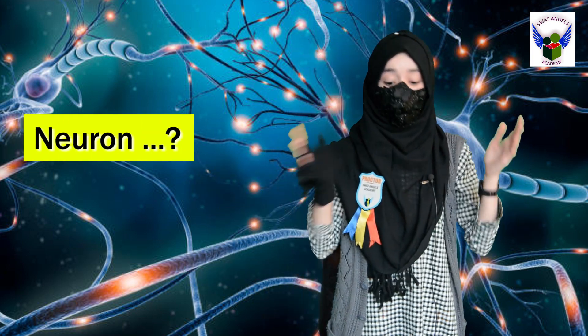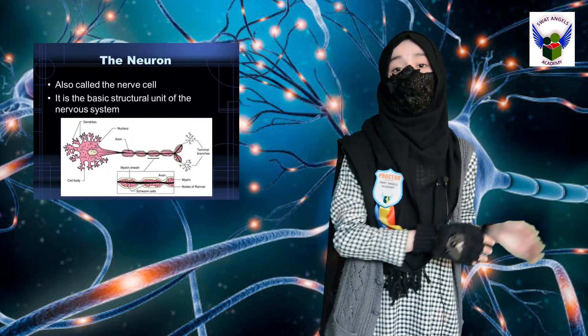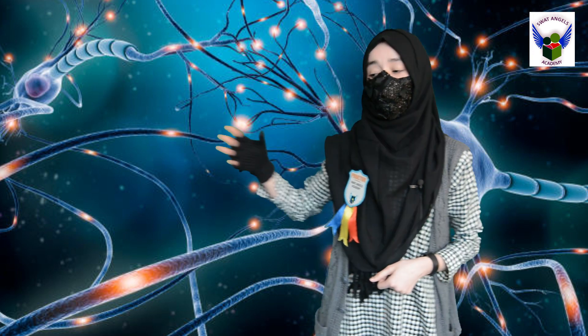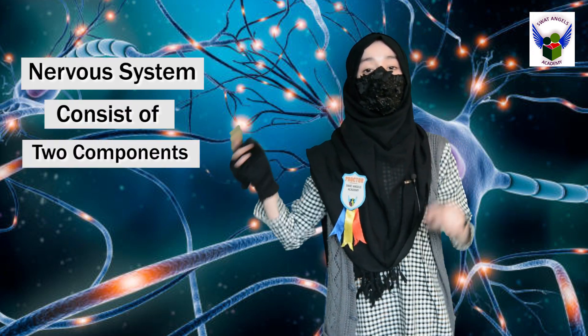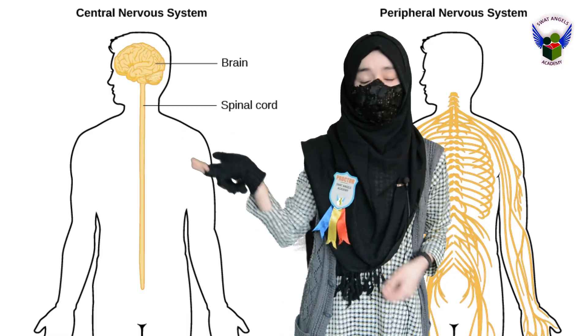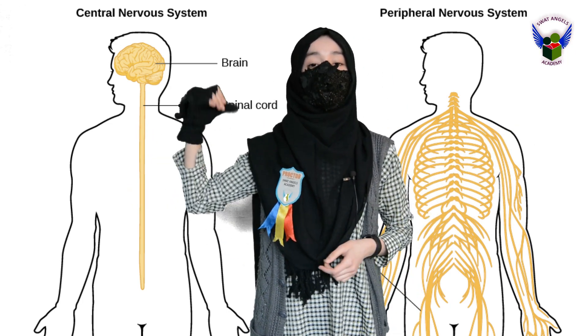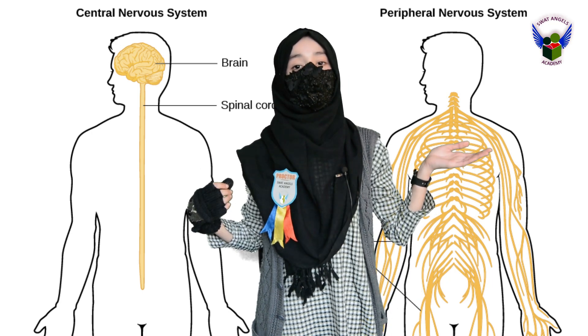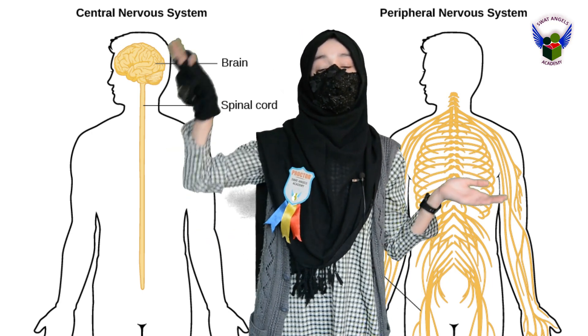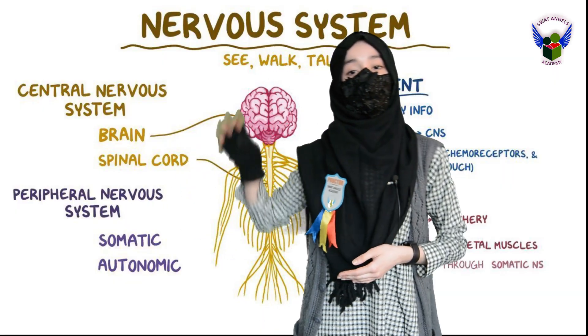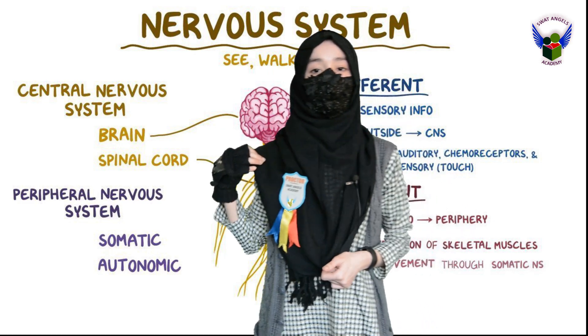Now, what is Neuron? Neuron is the basic structure and functional unit of the nervous system. The human and other animals' nervous system consists of two components: central nervous system and peripheral nervous system. Central nervous system is composed of the brain and spinal cord, while peripheral nervous system is composed of nerves that arise from the brain and spinal cord.